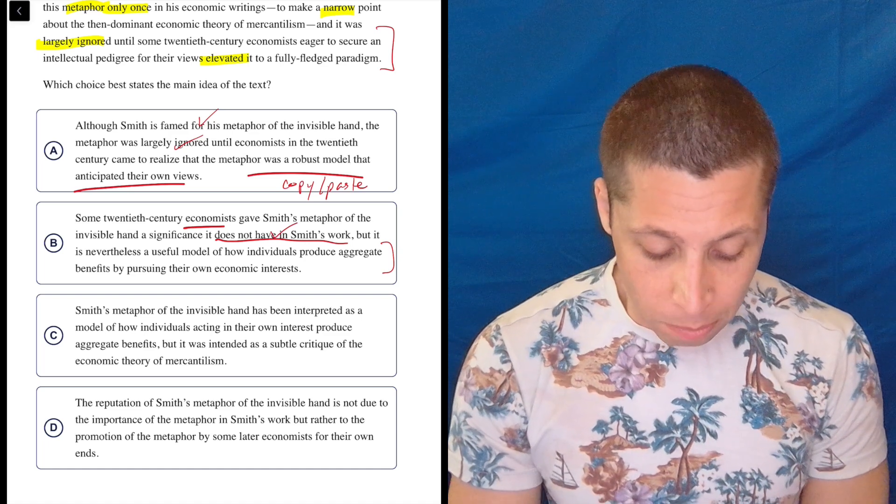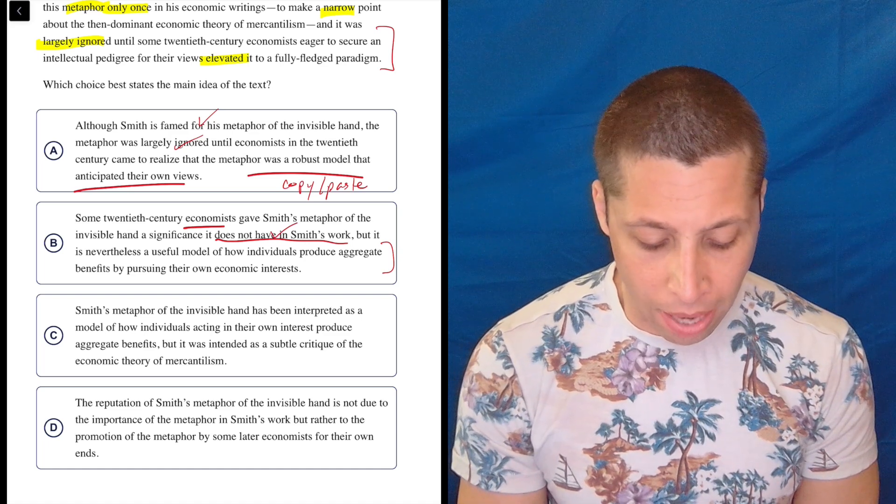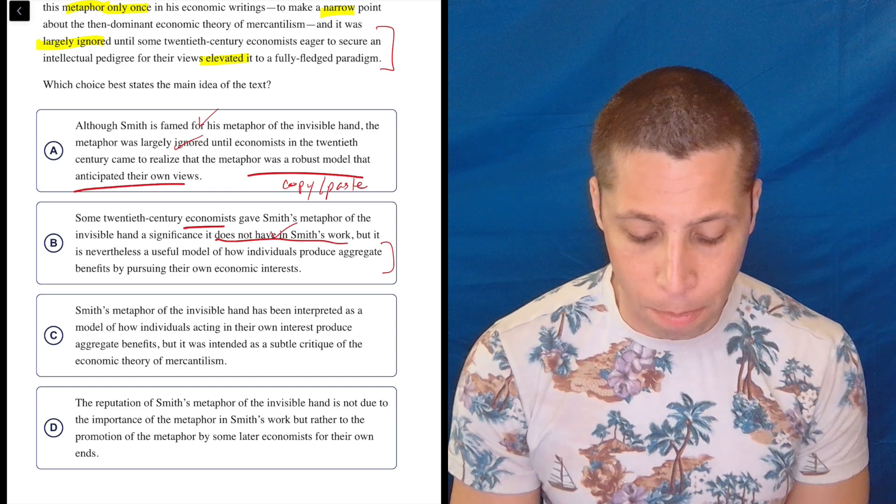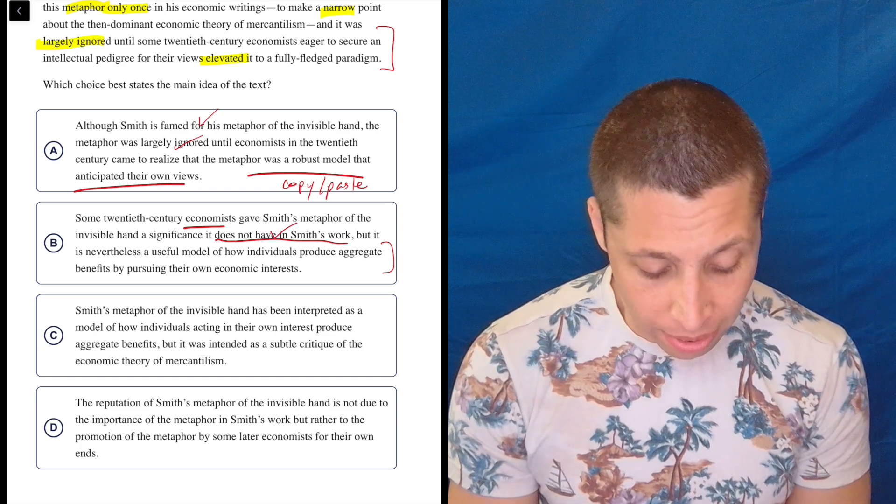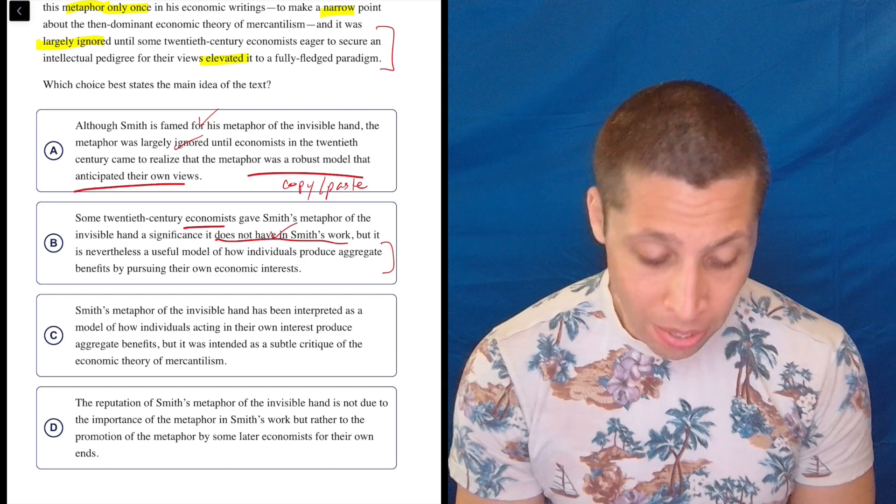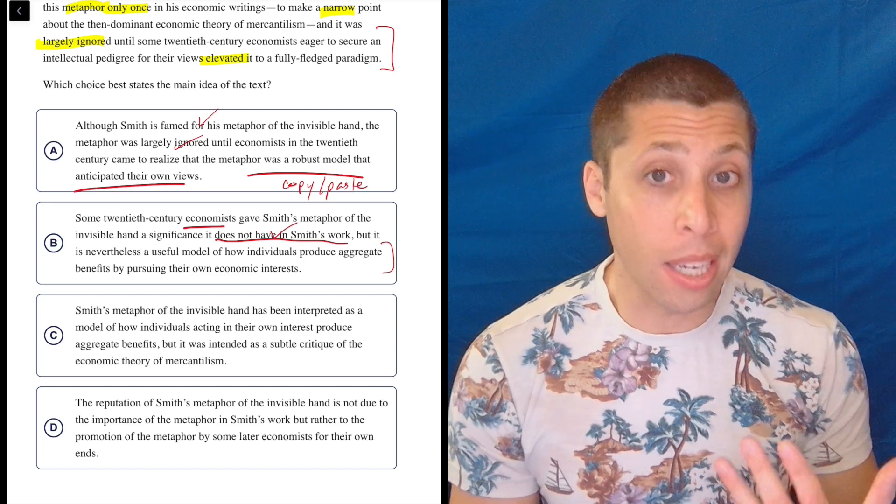Smith's metaphor of the invisible hand has been interpreted as a model of how individuals acting in their own interests produce aggregate benefits, but it was intended as a subtle critique of the economic theory of mercantilism.